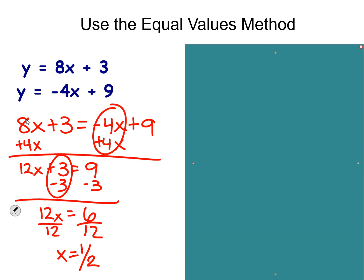Then I'm going to plug this in. I'm going to avoid the negative numbers, just because I'm more likely to make a mistake with that. I'm going to plug x as half into this equation. So half of 8 is 4 plus 3. I get 7. So my point of intersection is half and 7.